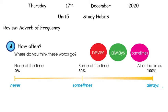Before we study today's lesson, let's first review some words. We call them adverbs of frequency. Adverbs of frequency are words used to talk about actions or what you do. Never, always, sometimes — these three words we call adverbs of frequency. Let's see the examples. First: never.